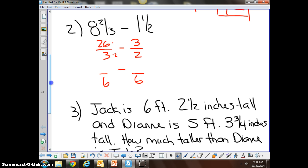3 times 2 is 6, so we've got to do 26 times 2, and we get 52. 2 times 3 is 6, and 3 times 3 is 9, so we get 9. So now we're doing 52/6ths minus 9/6ths. 52 minus 9 is 43 over 6.